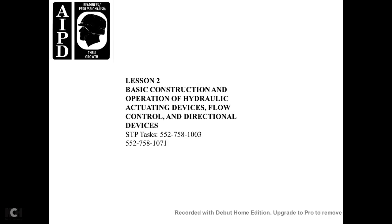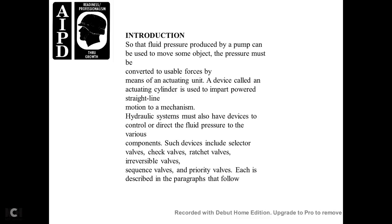Lesson 2: Basic Construction and Operation — Hydraulic Actuating Devices and Flow Control Directional Devices. STP Tasks 552-758-1003 and 552-758-1071. Introduction: So that fluid pressure produced by the pump can be used to move an object, pressure must be converted to usable force. The device used is called an actuating cylinder, which provides powered straight-line motion. The hydraulic system must also have devices to control and direct fluid pressure. Such devices include selector valves, check valves, ratchet valves, irreversible valves, sequence valves, and priority valves.